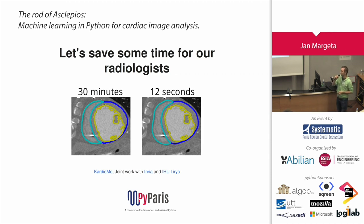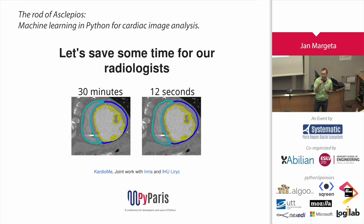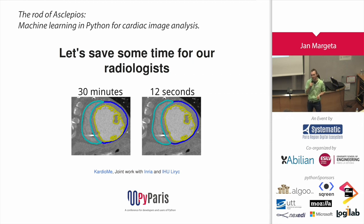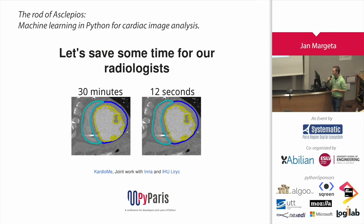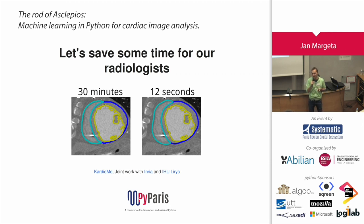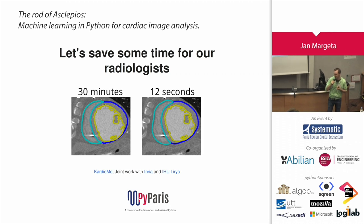At Cardiomy we use something similar — we define our own model and train it on cardiac images. What used to take our radiologist 30 minutes, they can now do in 12 seconds. That's quite a dramatic difference. Instead of the radiologist talking to you for 2 minutes and looking at images for 28, the whole thing can flip — your doctor can talk to you for 28 minutes and look at the images for only 2. The network has learned what cardiologists and radiologists need to study for years in medical school. Of course, we're not here to replace them — we want to aid them in making their processes more efficient.